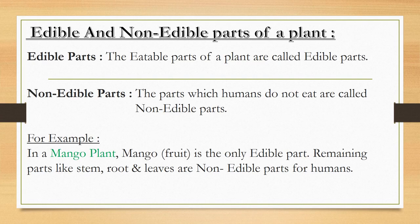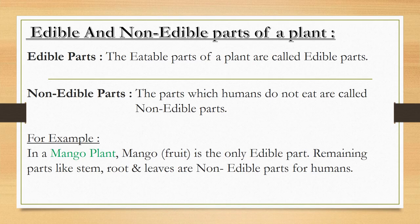Now we will learn about edible and non-edible parts of a plant. The eatable parts of a plant are called edible parts. Non-edible parts are the parts which humans do not eat. For example, in a mango plant, mango - that is the fruit - is the only edible part. The remaining parts like stem, root, and its leaves are non-edible parts for humans.